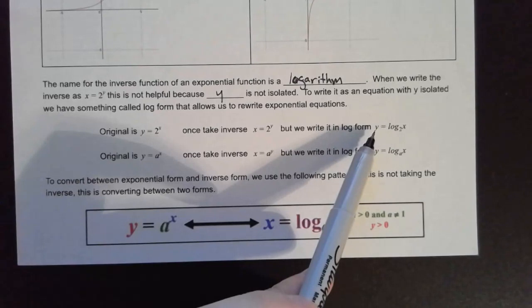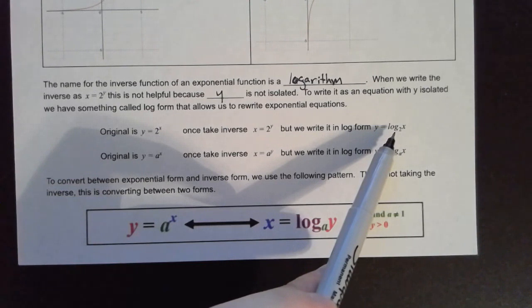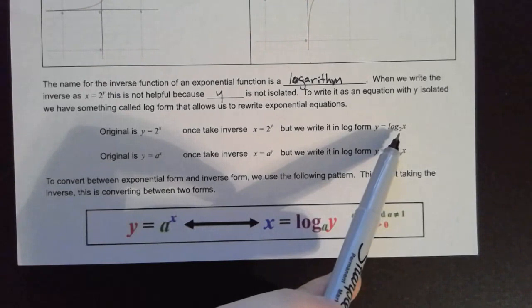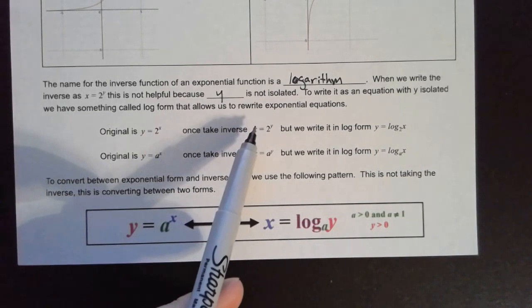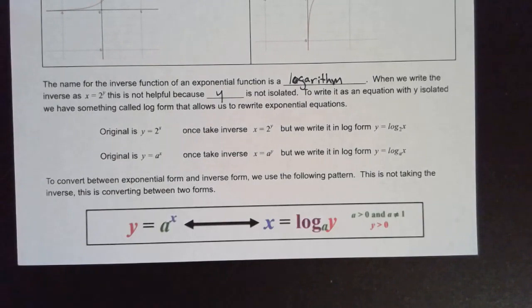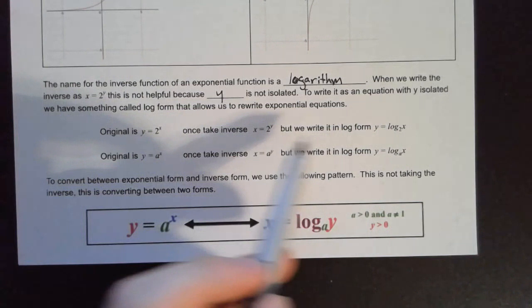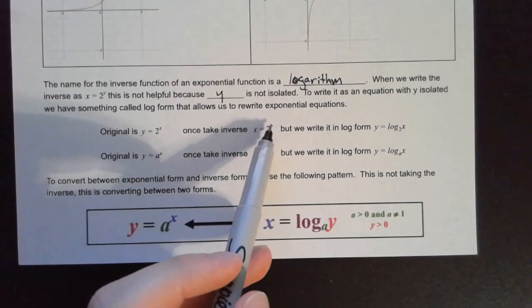In log form, Y is going to be by itself on one side of the equation — that's what we want for this to be a proper function. We use the word log and then write the base of our exponent down here as a subscript next to the log. So 2 goes down here as a subscript, and then what was on the other side — the X — goes right here. Your base goes down as a subscript.